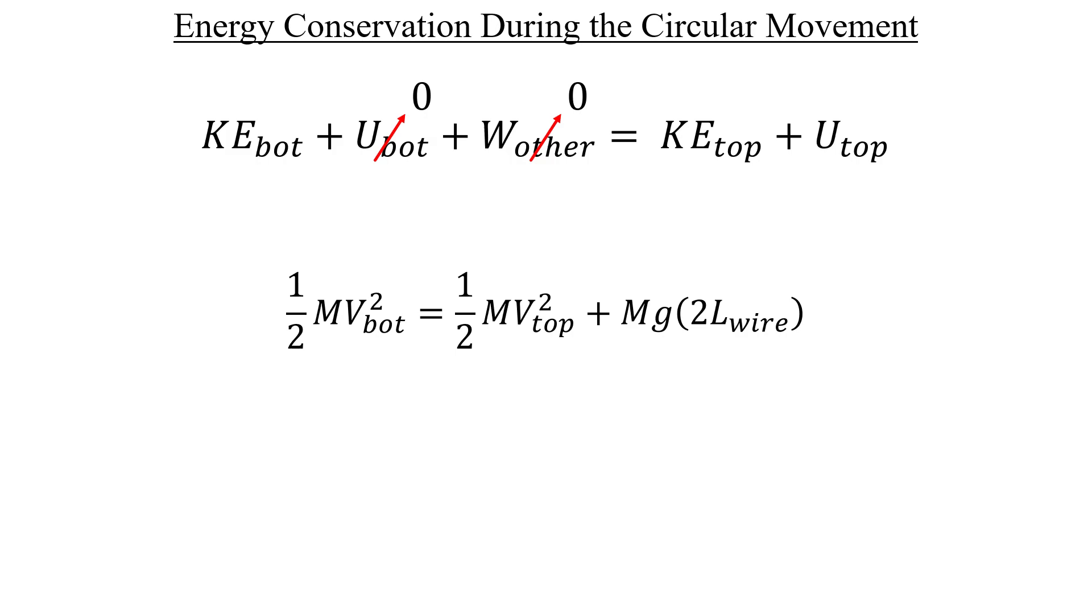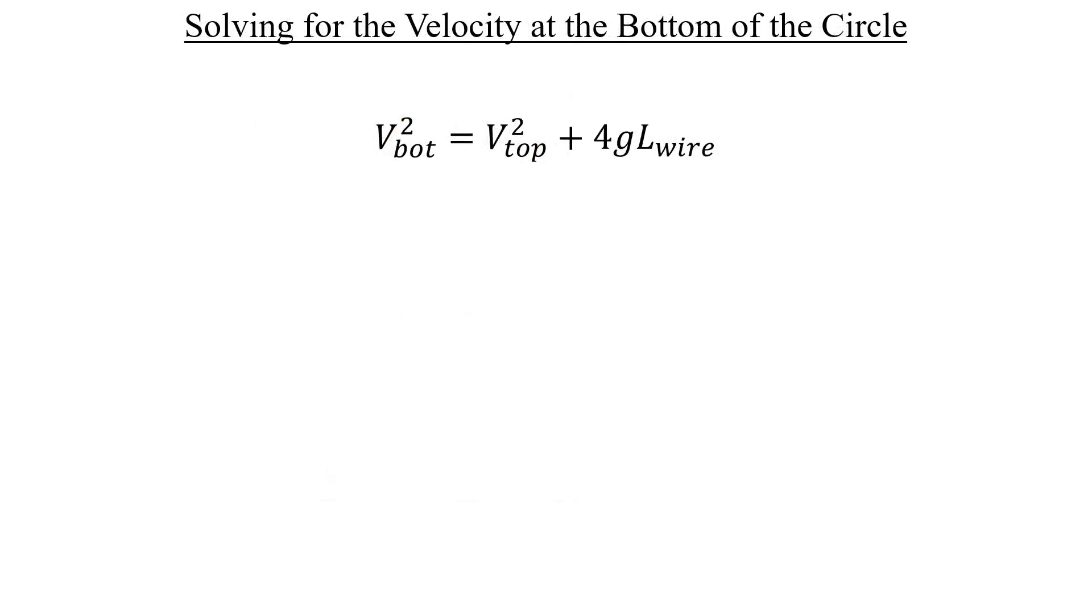We want to solve for the velocity at the bottom, this variable. So, let's divide out the masses on both sides first. Next, we can multiply both sides by two in order to get rid of these one halves. We said at the top position that the squared velocity was just g times the length of the wire, so let's insert that next. And with that in there, we can now combine the right-hand side to a total of five times g L wire. And that's all we can do in the energy portion.